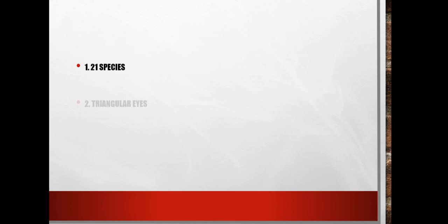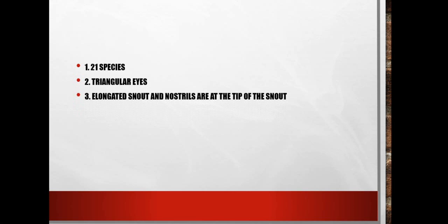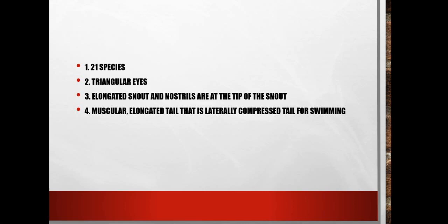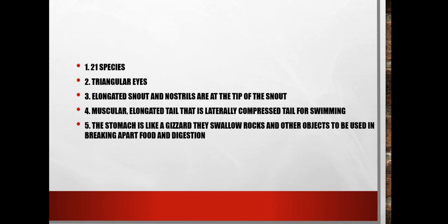They have 21 species. They have triangular eyes, elongated snouts, and nostrils at the tip of the snout. They have an elongated tail. The stomach is like a lizard's. They swallow rocks and other objects used in breaking apart food and digestion. They are all oviparous — they lay eggs outside the body and build nests.